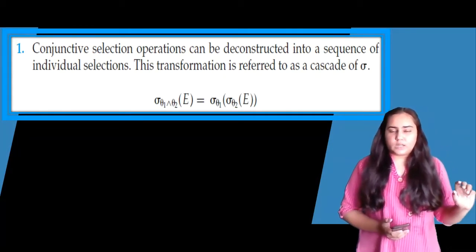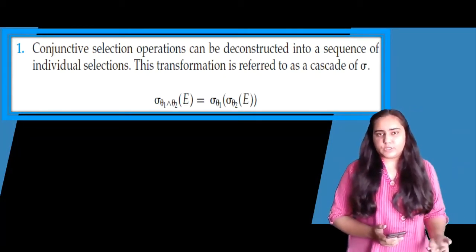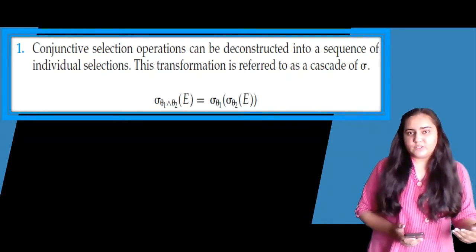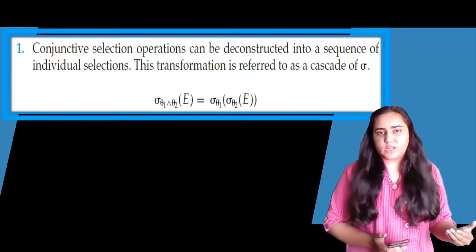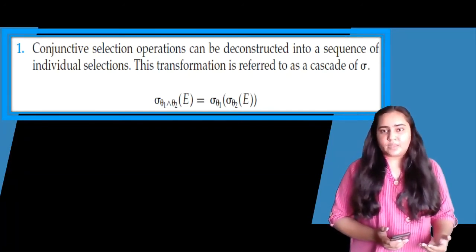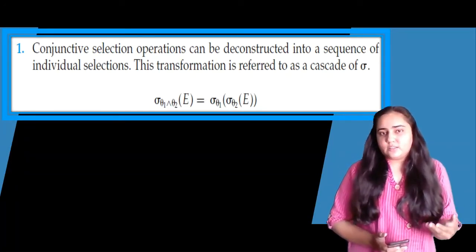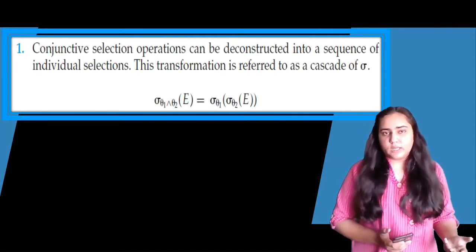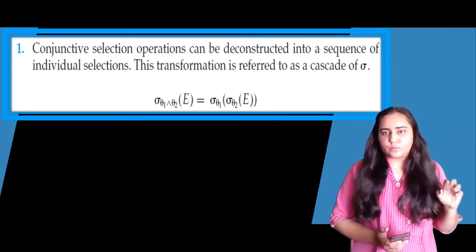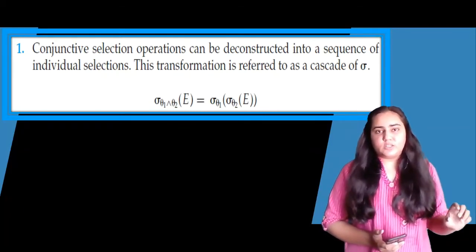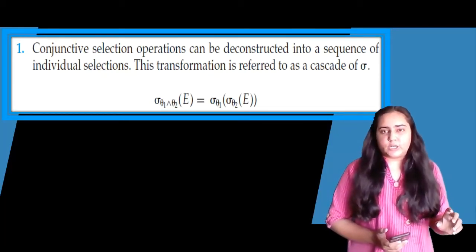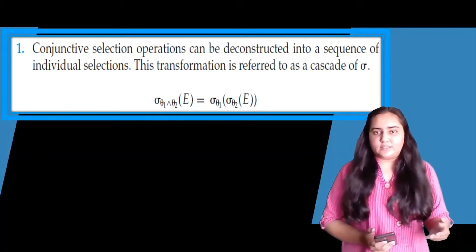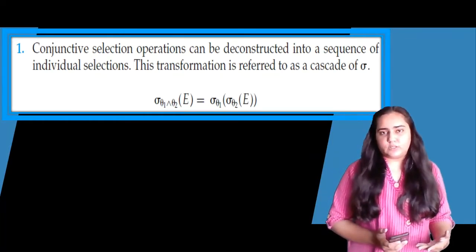In the example, E is a relation and the conditions outside are sigma conditions. You can see a sigma operation showing theta 1 and theta 2 as two different conditions — that AND operation between them is known as a conjunctive selection. Whenever there is a conjunctive selection, you can convert it into sigma theta 1 applied to sigma theta 2, separating the conditions in this manner.